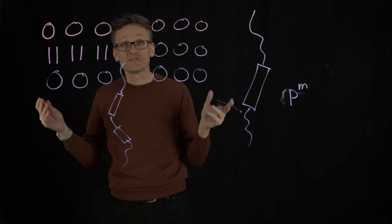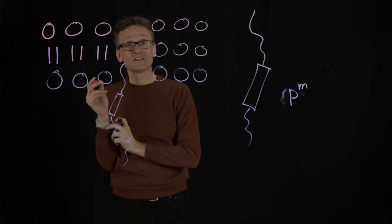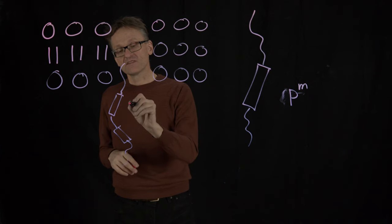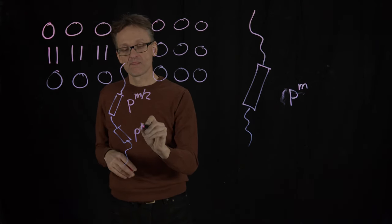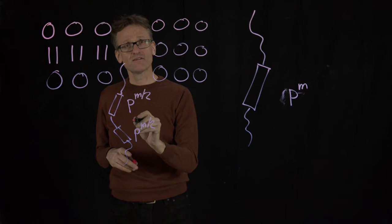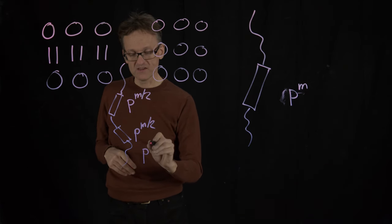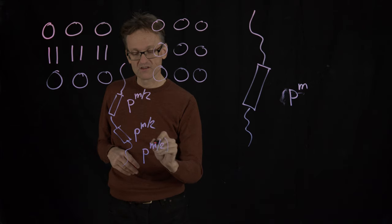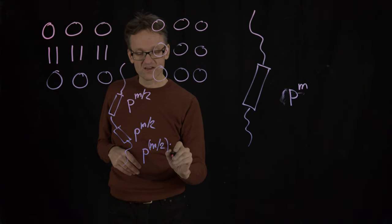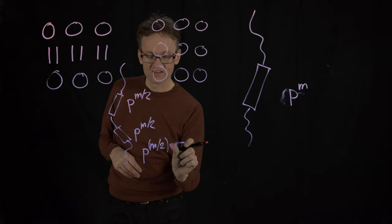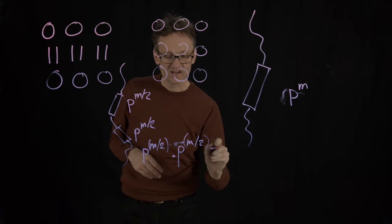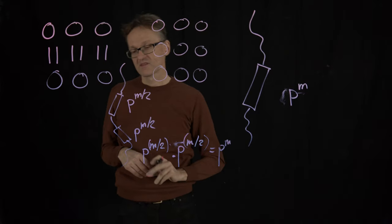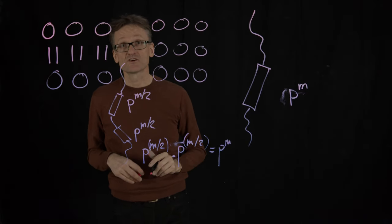I'm going to be blunt and say that it's 50-50, so the probability of being in a sheet is also p, but the length here is only m/2. On the other hand, I have two of them, so I'm going to have p raised to m/2 multiplied by p raised to m/2, right? And that's equal to p raised to m. So those probabilities are the same.